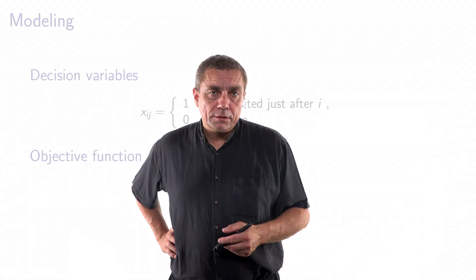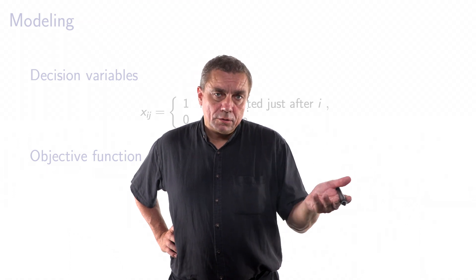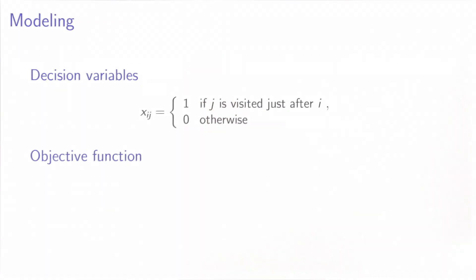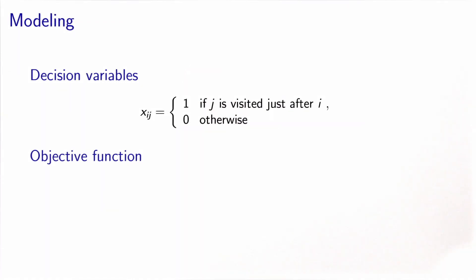In order to model it as an optimization problem, we need to do three things: define the decision variables, the objective function, and the constraints. We will consider the variable xij, which will be one if city j is visited just after city i, and zero otherwise.